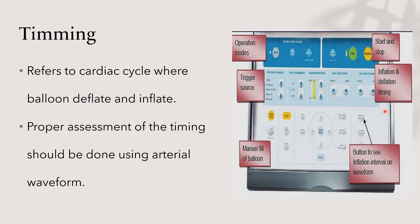This is a picture of the console. The second part covers frequency: one to one, one to two, one to three — referring to the deflation and inflation of the balloon, which indicates each cardiac cycle where the balloon deflates or inflates. A proper assessment of timing is shown using the arterial waveform.